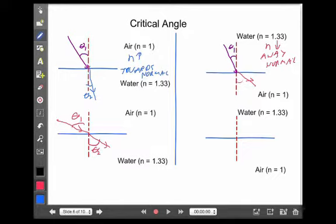That means that theta 1 is always going to be smaller than theta 2. So eventually there must be a point where I make theta 1 so big that theta 2 goes right along that particular boundary. And that point is known as theta c, the critical angle.